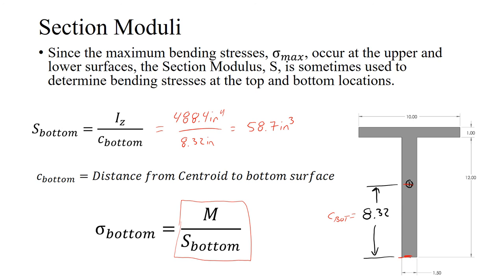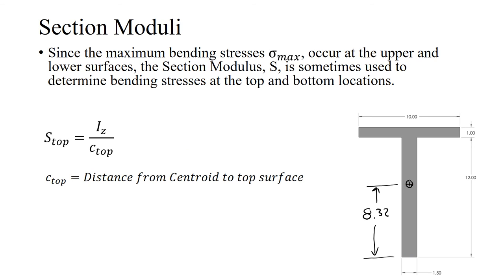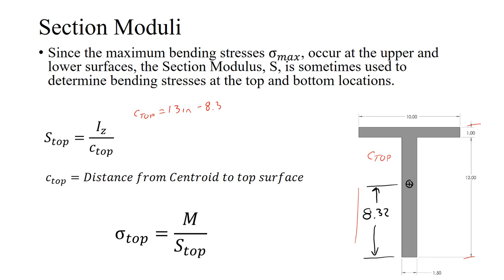With many materials, the sign of the stress doesn't matter, but when it does, pay attention. For the section modulus at the top: c_top = 13 − 8.32 = 4.68 inches. Therefore, S_top = 488.4 / 4.68 = 104.3 inches cubed.